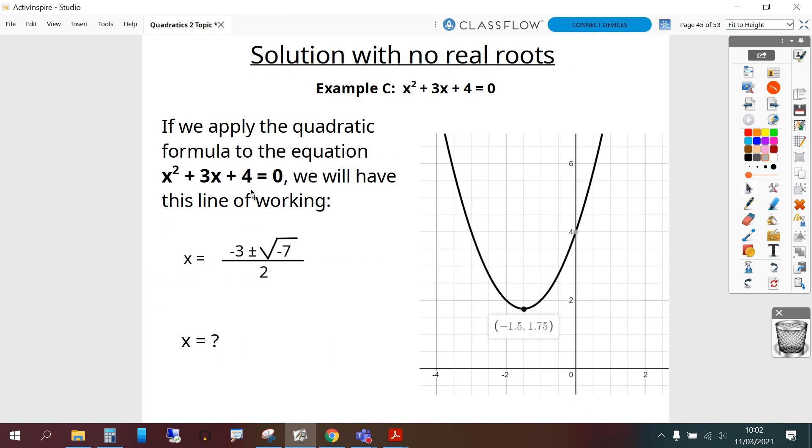If we apply the quadratic formula to the equation x squared plus 3x plus 4 equals 0, we will have this line of working. And we can't go any further than there.